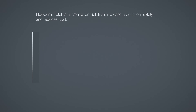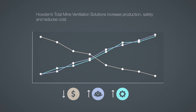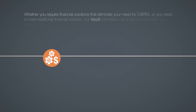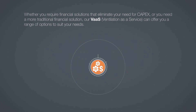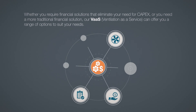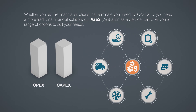Howden's Total Mine Ventilation Solutions significantly help reduce operating costs and increase safety and production. Part of our Total Mine Ventilation Solution is VAS, or Ventilation as a Service. VAS encompasses all of our turnkey technologies and engineering services that are customizable to suit any of your requirements. It also comprises financial solutions to help reduce your OPEX and eliminate your CAPEX needs.